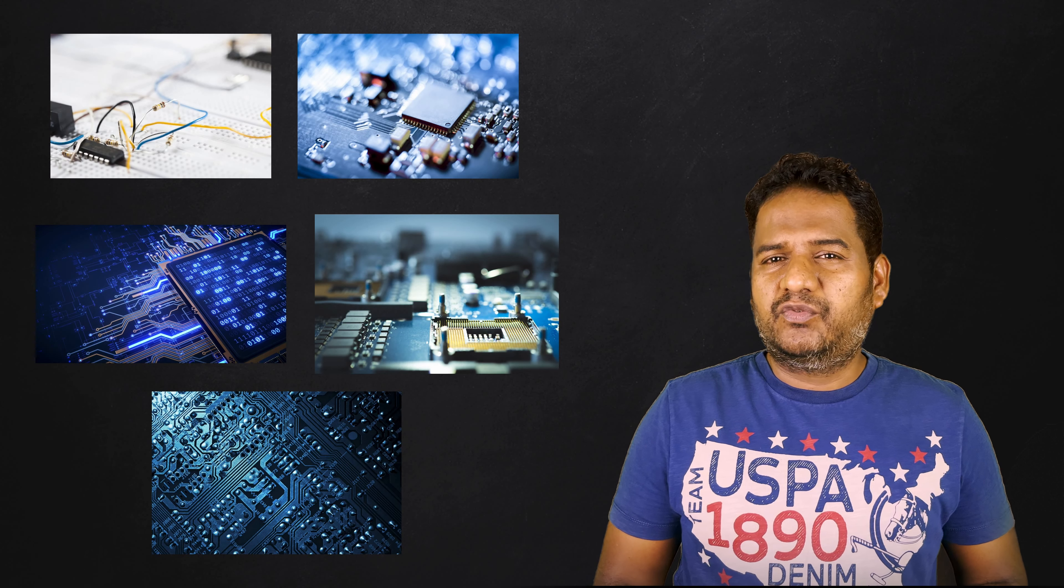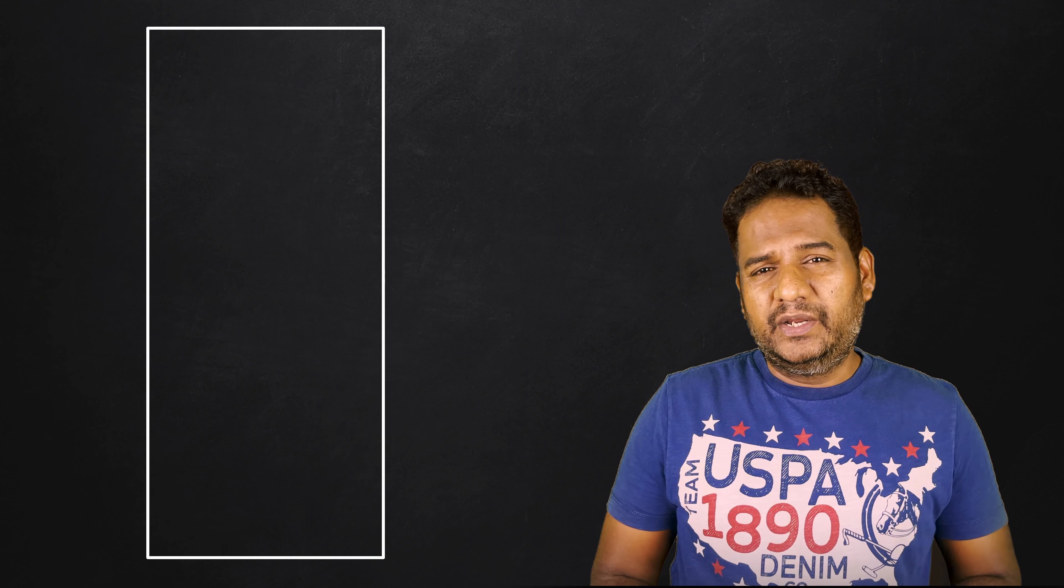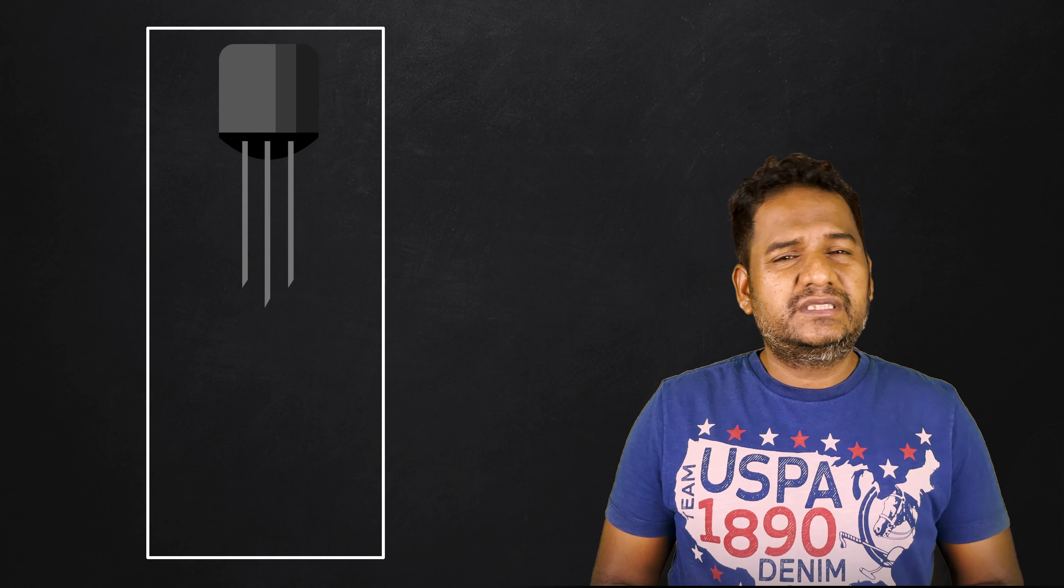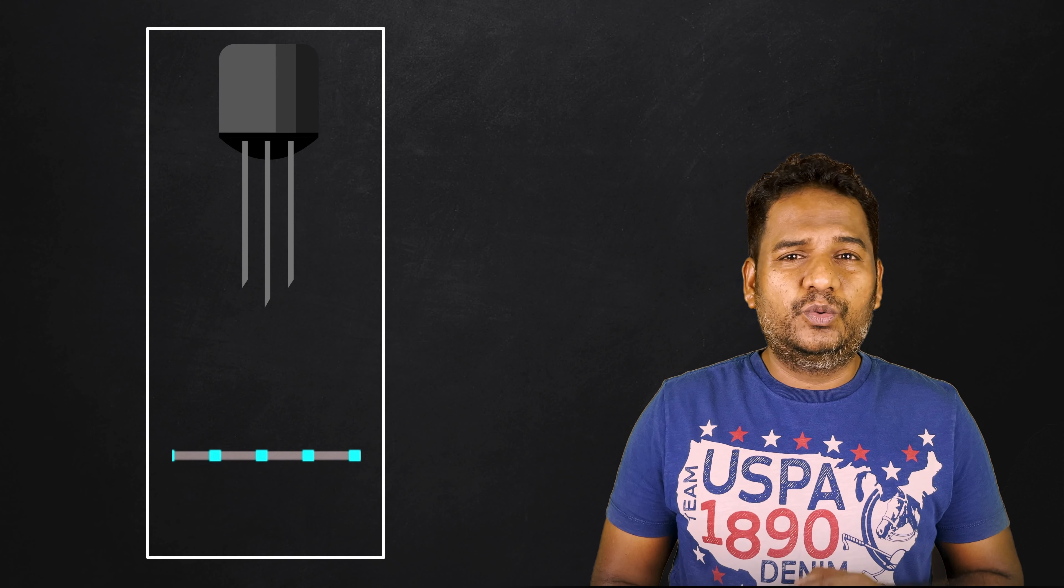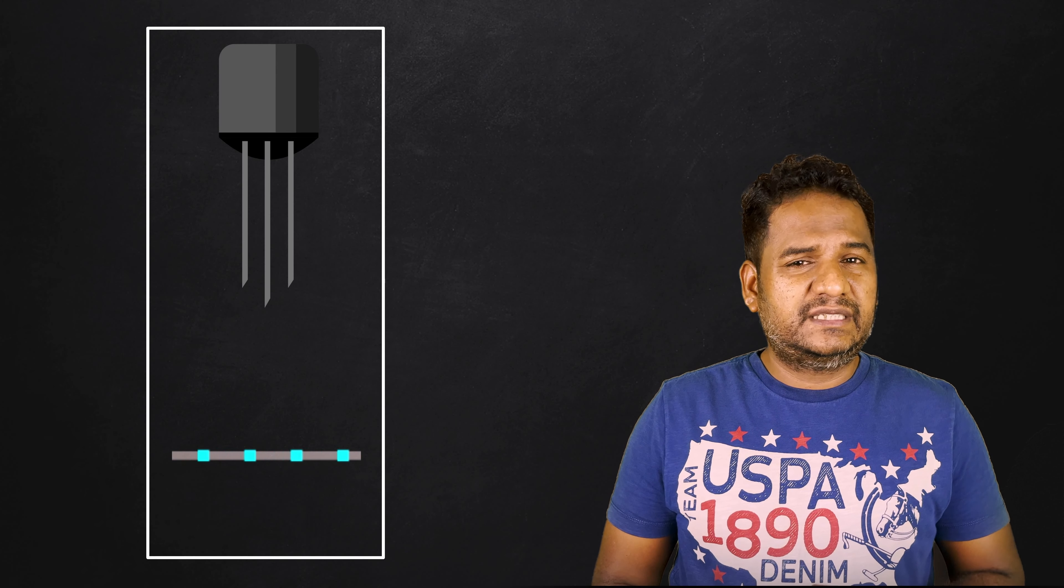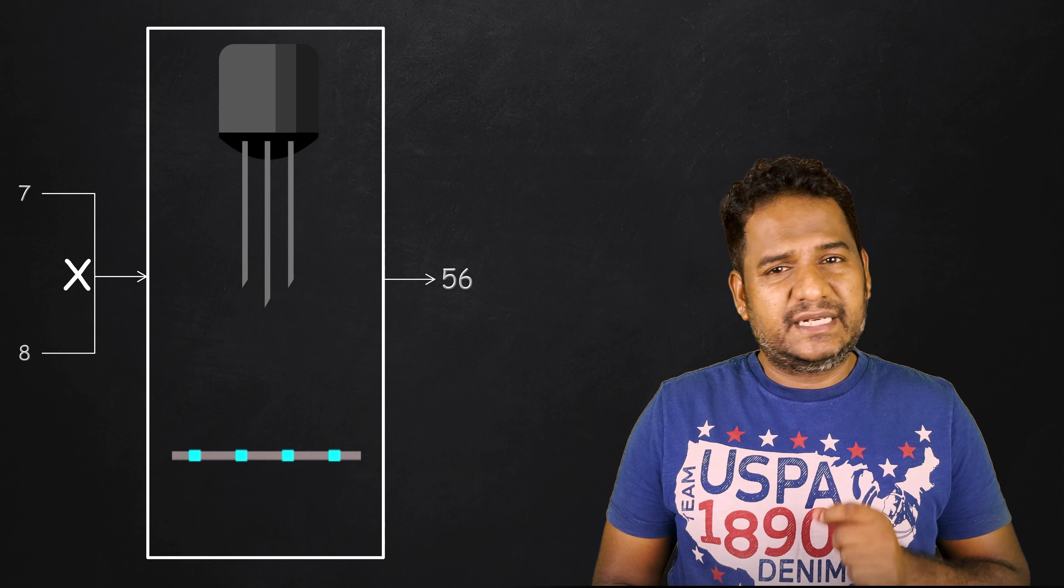It works by controlling the flow of electric current to perform various activities instructed by the computer program. Would you believe if I say we can use transistors and electric current to perform arithmetic operations such as addition, subtraction, multiplication, and division? Yes, it is possible. That's what the computer does. And that is what digital logic is all about.